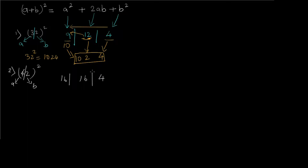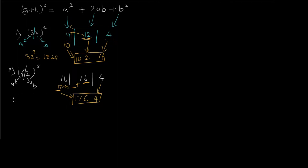To calculate the final answer, we take the last term as is: 4. From the middle term we take the rightmost digit, which is 6, and the leftmost digit (1) is added to the leftmost term. So 16 + 1 = 17, and we write it as is. So 42² = 1764. Pretty simple!